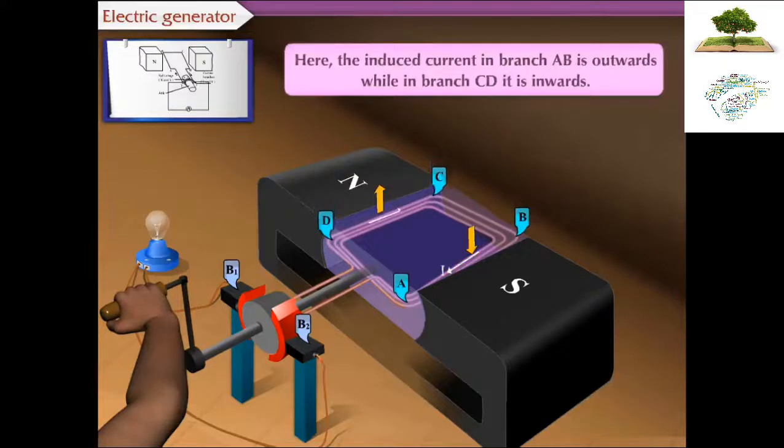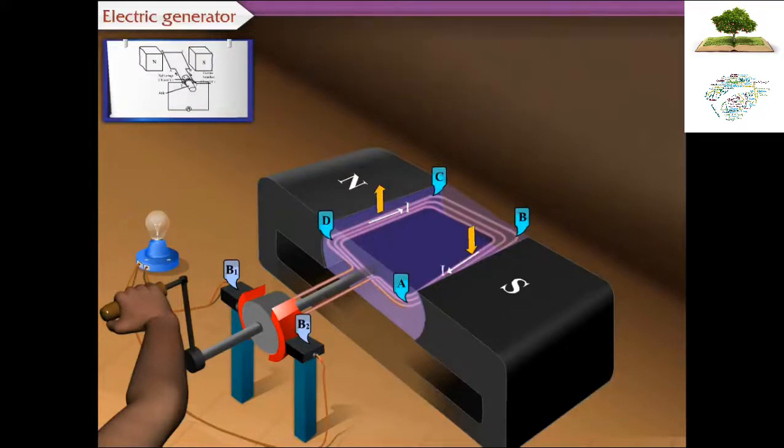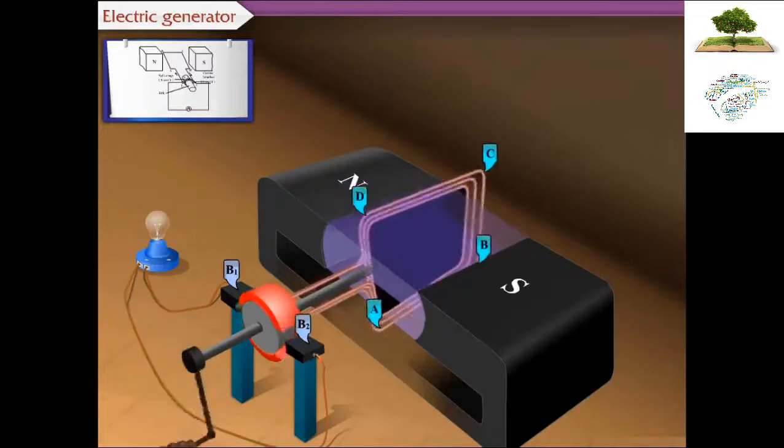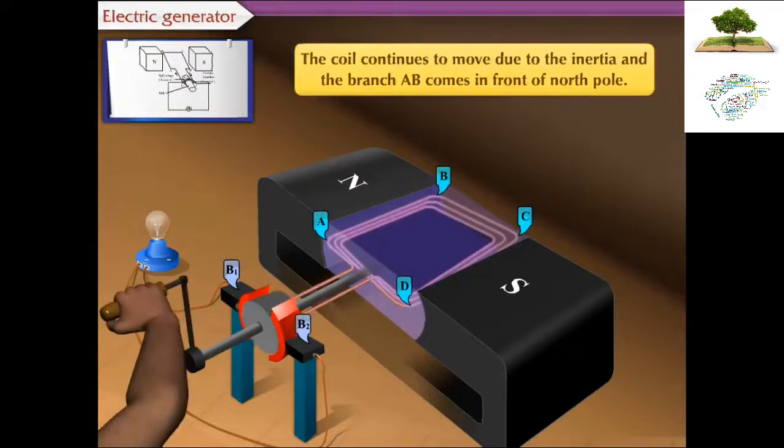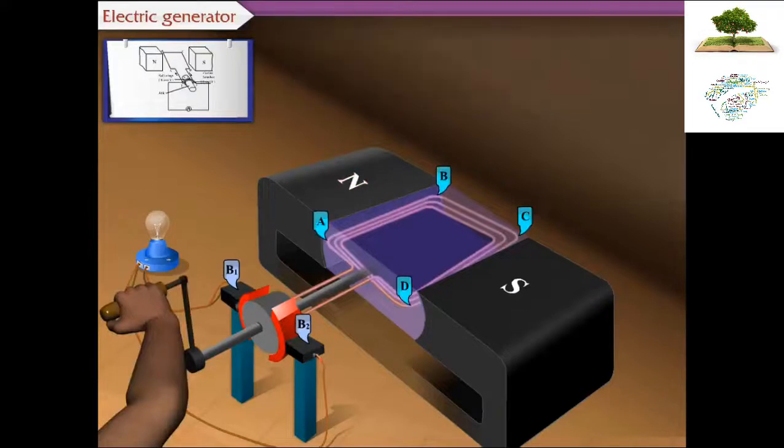Hence, in the circuit, the current flows from brush B1 to brush B2. When the coil rotates to right angles to the field, the contact of ring R1 with brush B1 breaks. Similarly, the contact of R2 with B2 breaks. The coil continues to move due to inertia and the branch AB comes in front of the north pole. Now, the ring R1 comes into contact with brush B2 and R2 with B1.